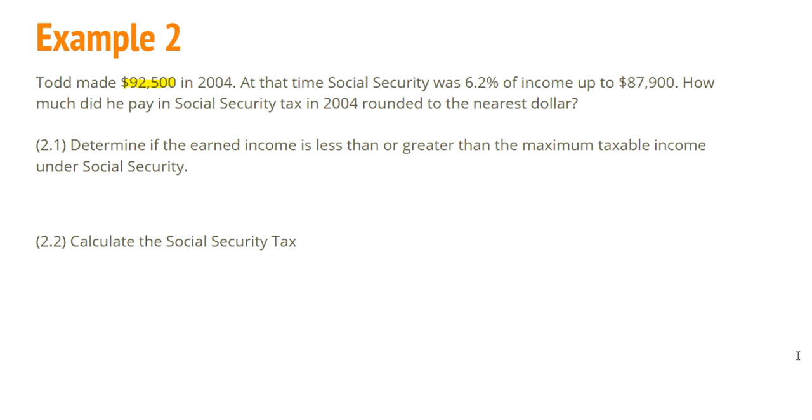Todd made $92,500 in 2004. At that time, Social Security was 6.2% of income up to $87,900. How much did he pay in Social Security tax in 2004? And we're going to round our answer to the nearest dollar.